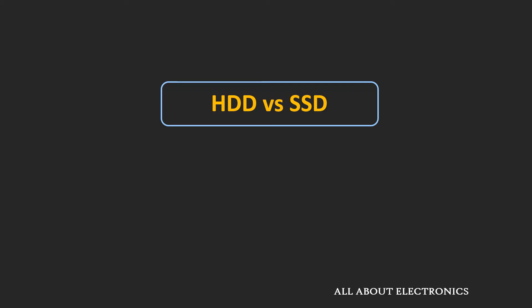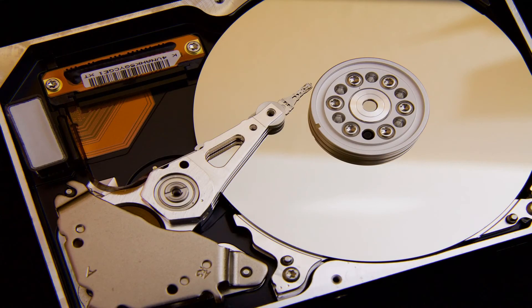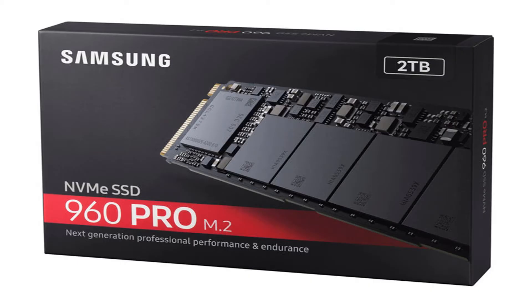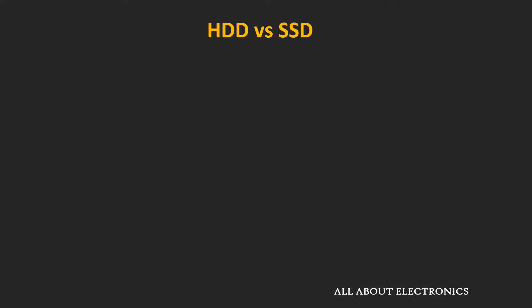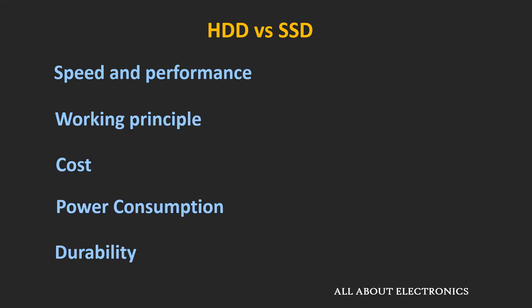Welcome to the YouTube channel ALL ABOUT ELECTRONICS. In this video, we are going to compare the two types of storage drives which are commonly used to store data permanently in desktops and laptops. Conventionally, hard disk drives have been used as a storage solution for more than two decades. But in recent years, SSDs or solid state drives are gaining popularity because of their speed and performance. We'll compare these two drives in different aspects like speed and performance, working principle, cost, storage capacity, and many other aspects.